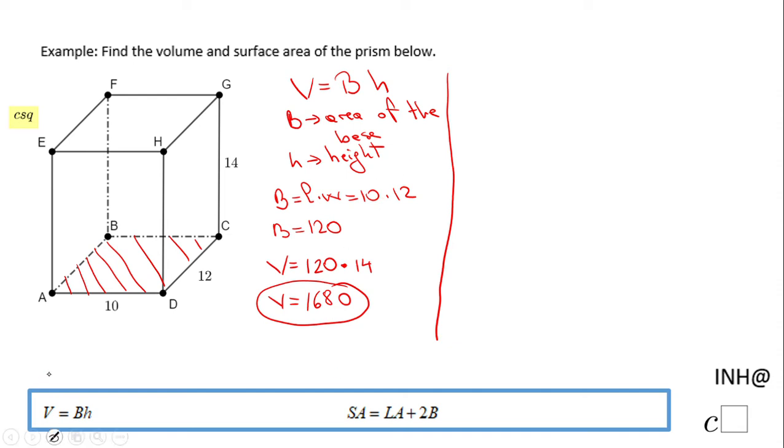The second part is asking us the surface area. You notice the formula right here: the surface area is the lateral area of this prism plus two bases, and the two bases here represent these rectangles.